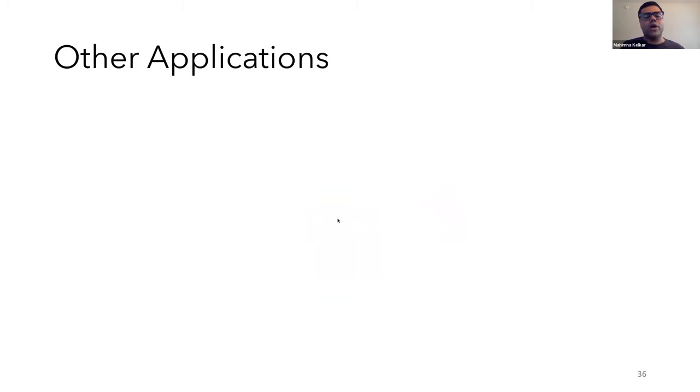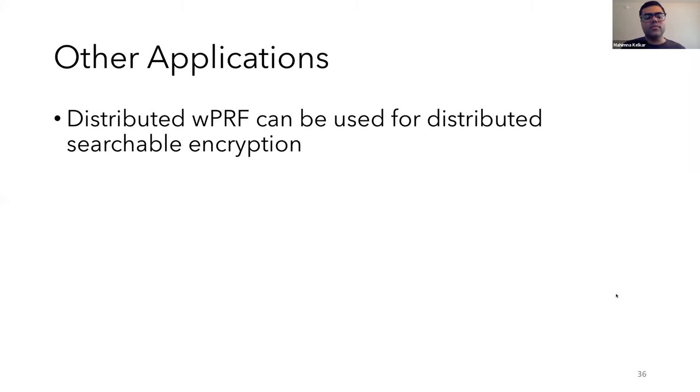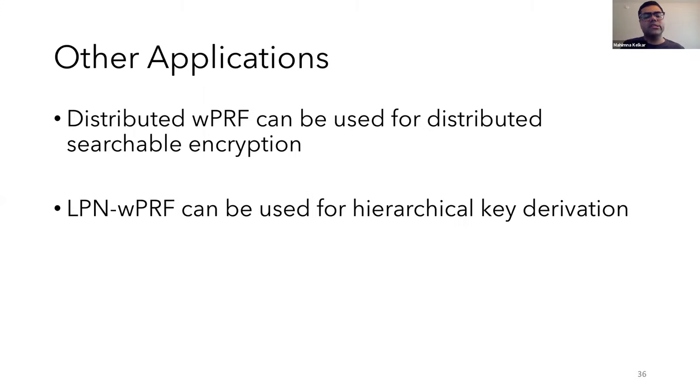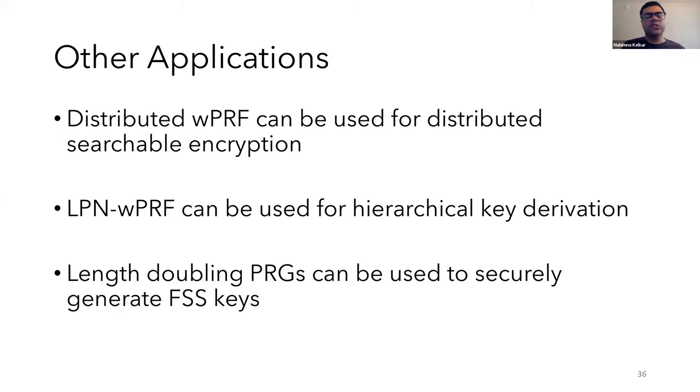I'll also briefly comment on other applications. Our biggest competitive advantage over other approaches is likely to be for the two- and three-party evaluation of PRGs and the weak PRF in the fully distributed setting. So in particular, current techniques like OPRFs don't work in this setting. So for these kinds of applications, our candidates will be suited best. So for instance, our fully distributed weak PRF protocols can be used for distributed searchable encryption. Also, since our LPN weak PRF has inputs and outputs over Z2, it's natural to use this for applications like hierarchical key derivation, where the output of one evaluation needs to be kept secret and fed in as input to the other evaluation. Another application is to use length doubling PRGs to securely compute keys for function secret sharing.